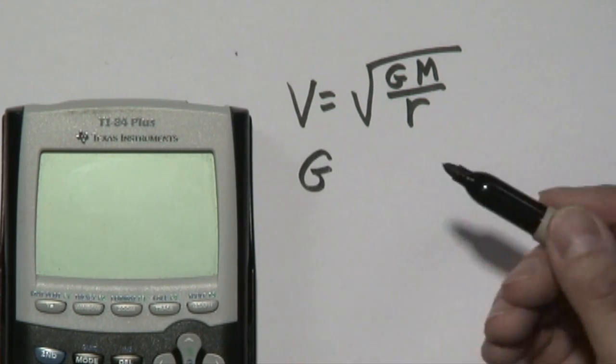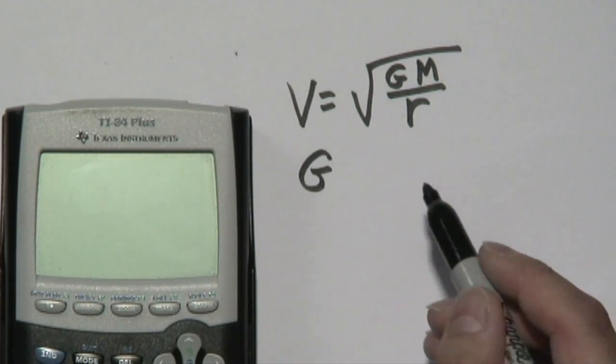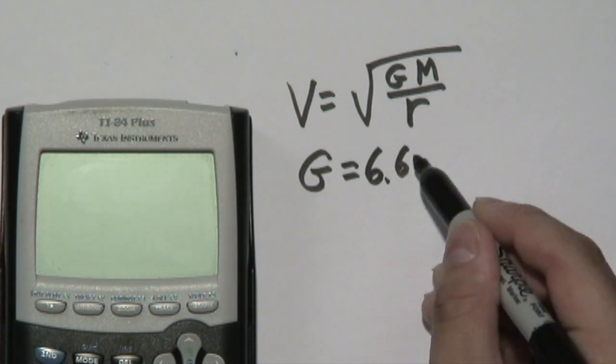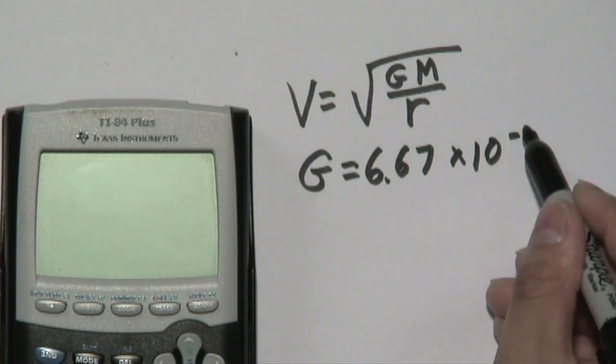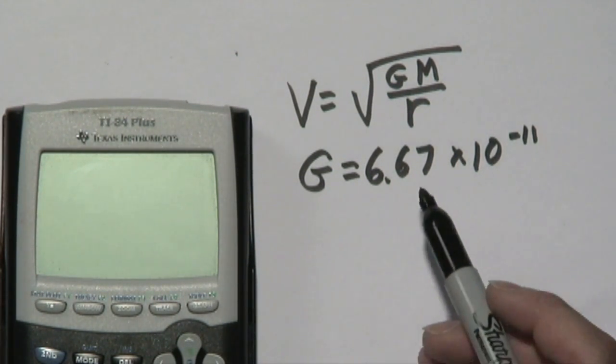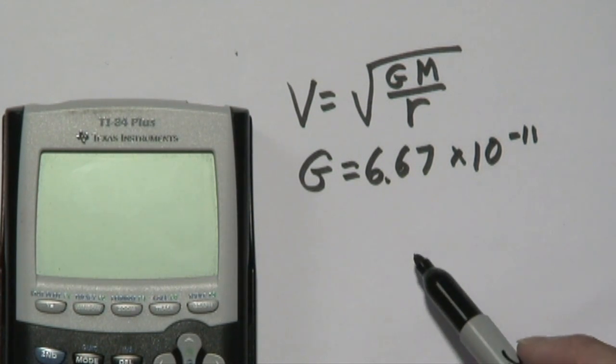Now G is known as a gravitational constant. It is a number in scientific notation: 6.67 times 10 to the negative 11th power. So that means every time you're going to calculate orbital velocity, you have to plug this number in place of G.